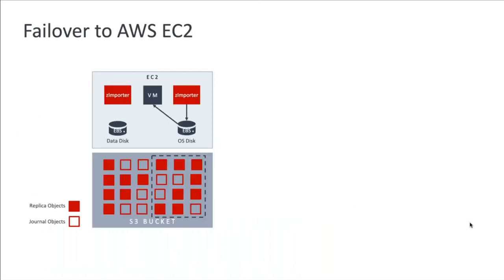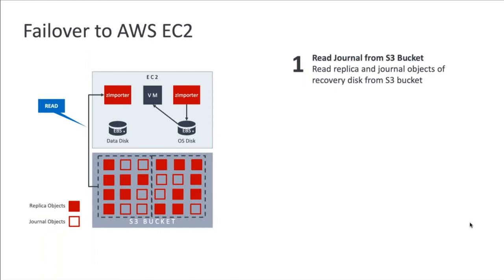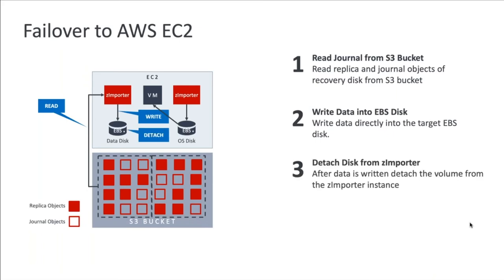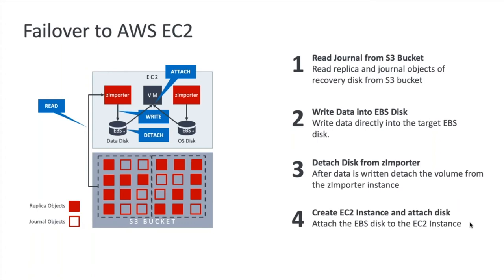The failover from VMware into Amazon EC2 is similarly straightforward. First, we use the Z import instances to read the journal from the S3 bucket. Then we write that data directly into an EBS disk. We detach that disk from the Z importer, then create the EC2 instance and attach the disk to it. So we're taking the S3 bucket data via the Z importer, writing it into the EBS volume, and attaching that EBS disk to the EC2 instance — again using the VPG specs specified earlier.